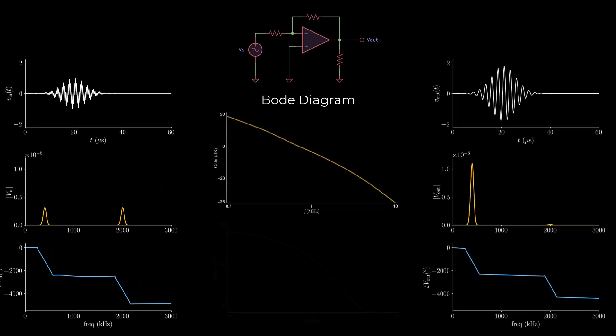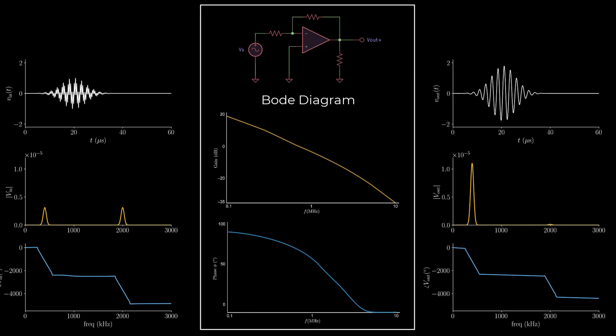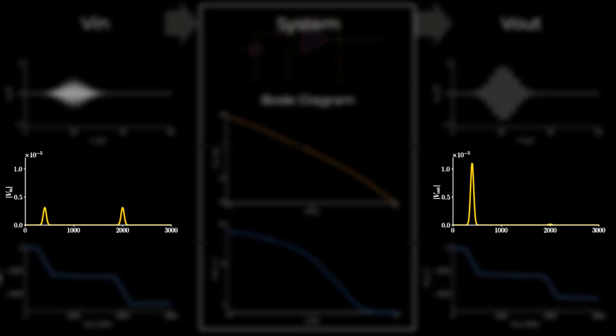The Bode diagram, on the other hand, doesn't characterize individual signals. Instead, it illustrates the relationship between input and output signals of a given system. At 400 kHz, the Bode diagram shows an amplification. This is what we observed in the frequency content of the output signal. Overall, this Bode diagram illustrates that low frequencies are amplified, while high frequencies are attenuated. Compare the Fourier magnitude plots of the input and output signals, and you'll notice those changes.